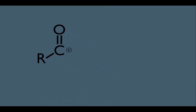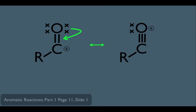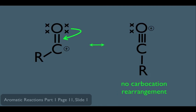The acyl group has resonance — electrons on the oxygen allow the positive charge to move from carbon to oxygen. This means we will not get carbocation rearrangement with this reagent. In Friedel-Crafts alkylation, which is different from acylation, carbocation rearrangement does occur. For the Orgo exam, remember that in Friedel-Crafts acylation, carbocation rearrangement is not a concern.